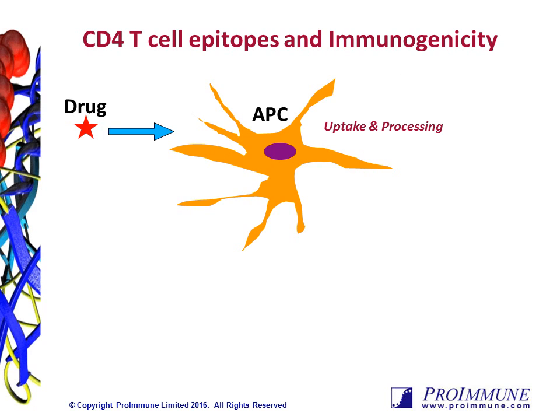Immunogenicity, or unwanted immune responses, can be a significant obstacle in the development of biological drugs. There are multiple factors that contribute to immunogenicity, and these can be described as either extrinsic or intrinsic factors. Extrinsic factors include things like the route of administration in which the drug is given, the frequency of exposure to that drug, and the immune status of the patient receiving it.